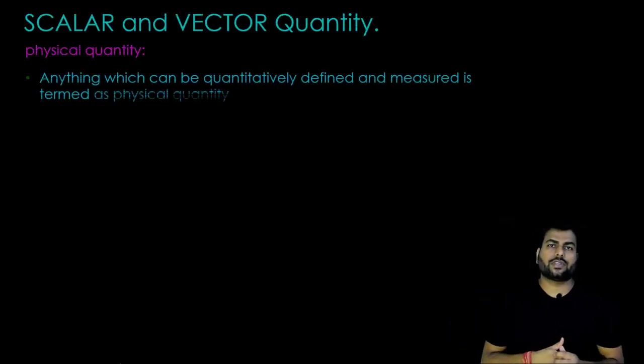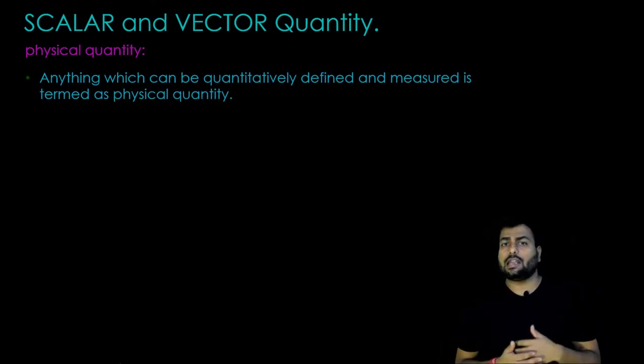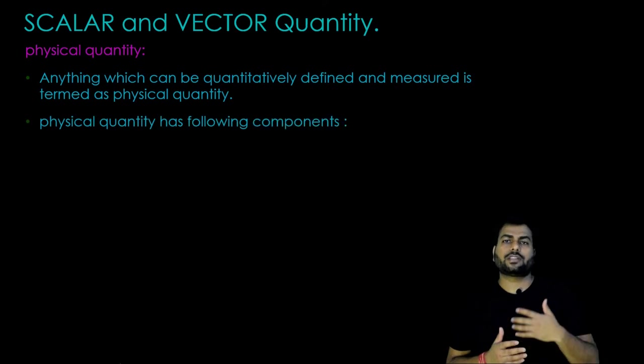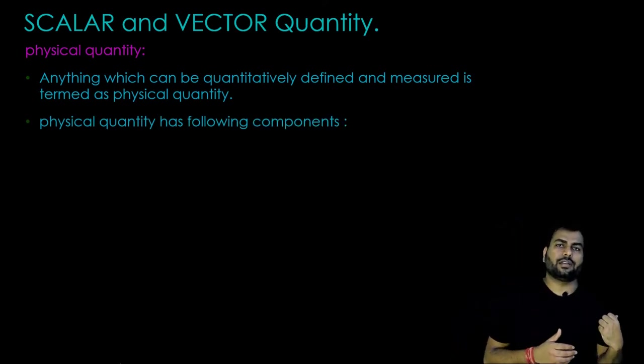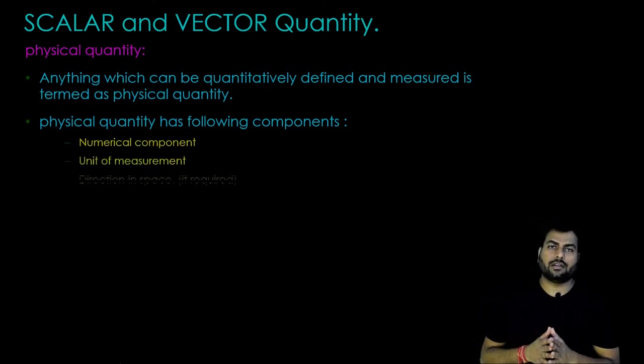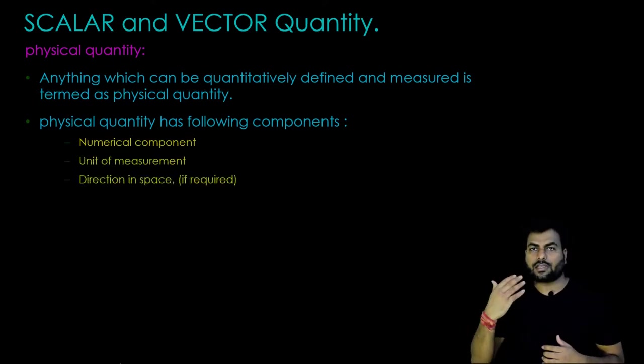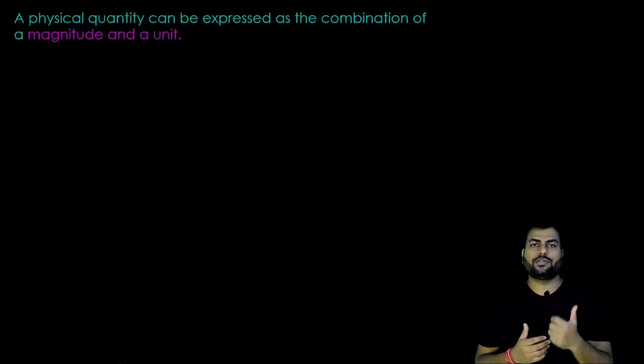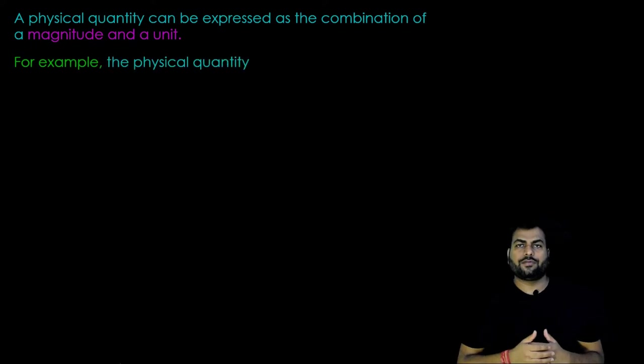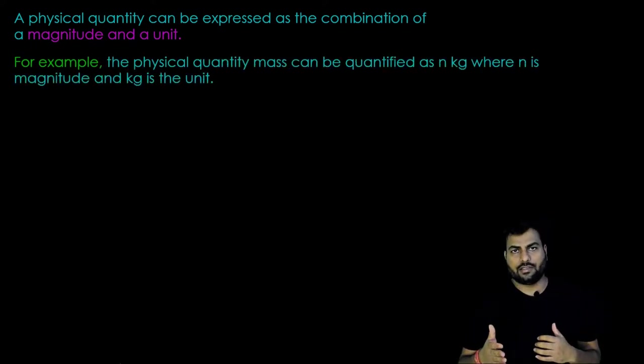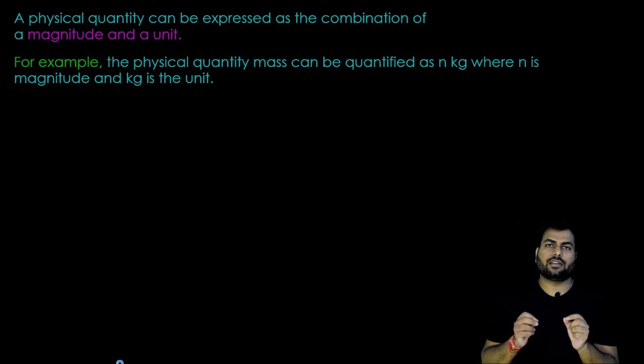In physics, anything which can be quantitatively defined and measured is termed as physical quantity. A physical quantity has following components: Numerical component, unit of measurement and direction in space if required. A physical quantity can be expressed as the combination of magnitude and a unit. For example, physical quantity of mass can be quantified as n kg where n is the magnitude and kg is the unit.